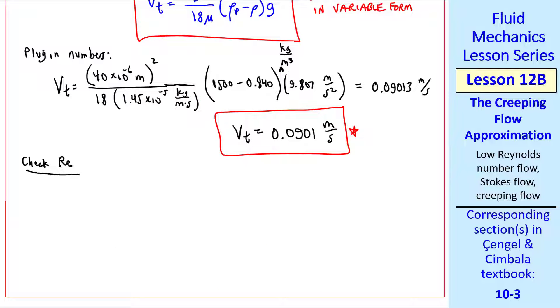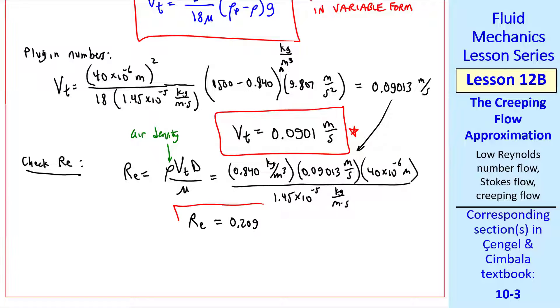Finally, as I mentioned, we need to check the Reynolds number. Again, we plug in our numbers. Be careful here. This density is the density of the air. Since Reynolds number is based on the fluid, don't use the density of the particle in calculating Reynolds number. This is VT that we just calculated, and the diameter, and the viscosity. And we get a Reynolds number of 0.209.